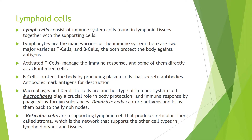Macrophages and dendritic cells are another type of immune system cell. Macrophages play a crucial role in body protection and immune response by phagocytizing foreign substances. Dendritic cells capture antigens and bring them back to the lymph nodes. Reticular cells are a supporting lymphoid cell that produces reticular fibers called stroma, which is the network that supports the other cell types in lymphoid organs and tissues.